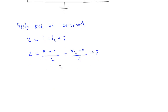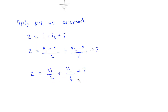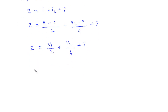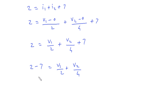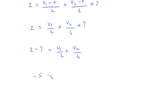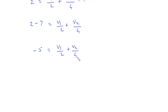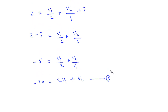This gives us: 2 is equal to v1 by 2 plus v2 by 4 plus 7. Taking 7 to the left side: 2 minus 7 is equal to v1 by 2 plus v2 by 4, which is minus 5 equals v1 by 2 plus v2 by 4. Multiplying both sides by 4, we get minus 20 equals 2v1 plus v2. Let us call this Equation 1.